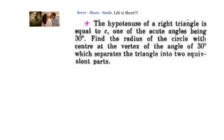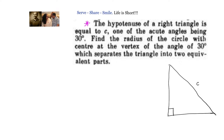Let's draw a right triangle first with the information given to us. We have a right triangle — that's our right triangle. The hypotenuse is equal to C. One of the acute angles is 30 degrees, so let us say this angle is equal to 30 degrees. We want to find the radius of the circle which divides the triangle into two equal parts.